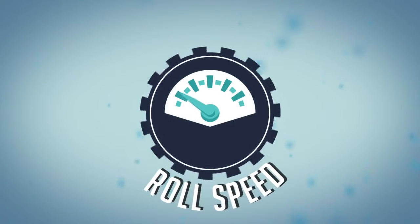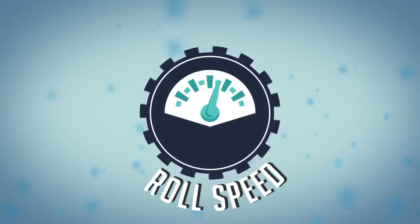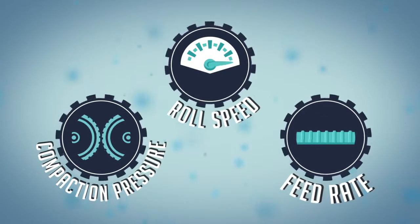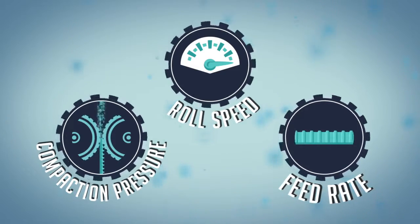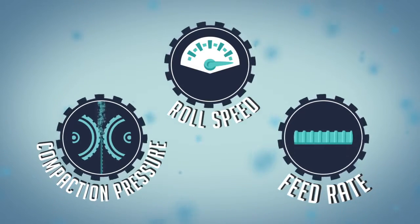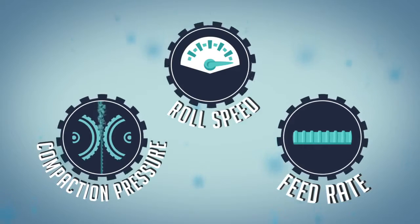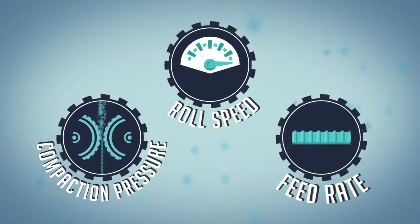Roll speed can also affect the quality and efficiency of the roller compaction process. Roll speed along with other parameters will determine the retention time of the blend in the compaction area. Roll speed should be optimized to achieve the highest quality and most consistent ribbons possible.